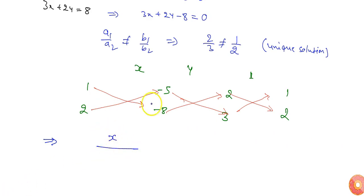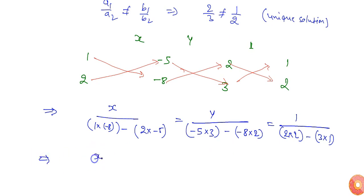So here x by: it will be 1 into -8 minus 2 into -5, equals to y by: -5 into 3 minus -8 into 2, equals to 1 by: 2 into 2 minus 3 into 1. So I will get x by: -8 minus -10, equals to y by: -15 minus -16, equals to 1 by: 4 minus 3.